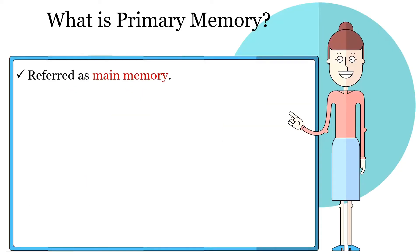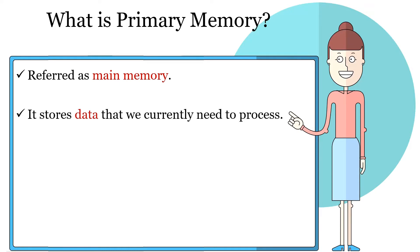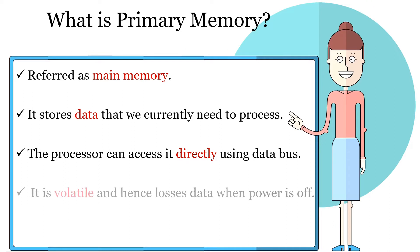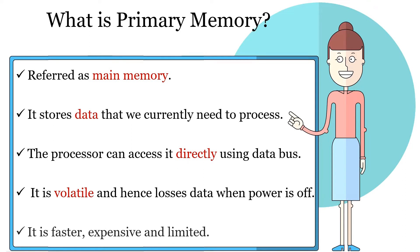Primary memory is the main memory of your system as it holds the data and instructions that need to be processed currently. The primary memory is the internal memory, thus the processor or CPU is able to access this memory directly. Hence, it is accessed faster as compared to the secondary memory. The primary memory is volatile because as soon as the system power is off, the primary memory loses its data. It is made of semiconductor and hence it is comparatively expensive than secondary memory and present in limited amount in the system.